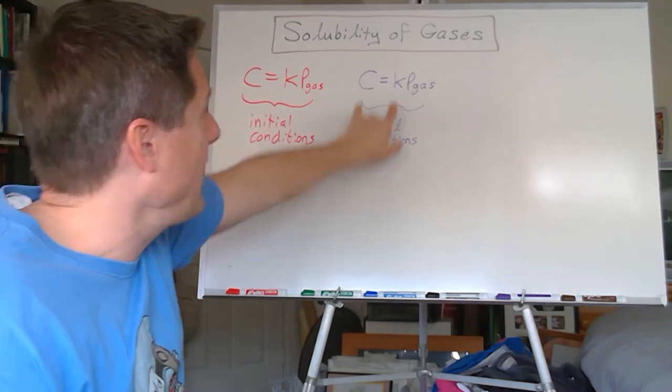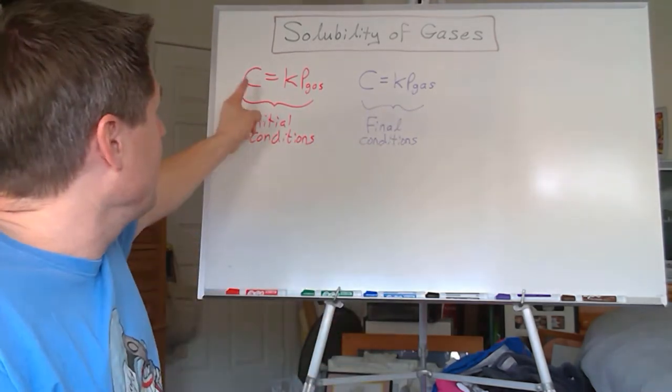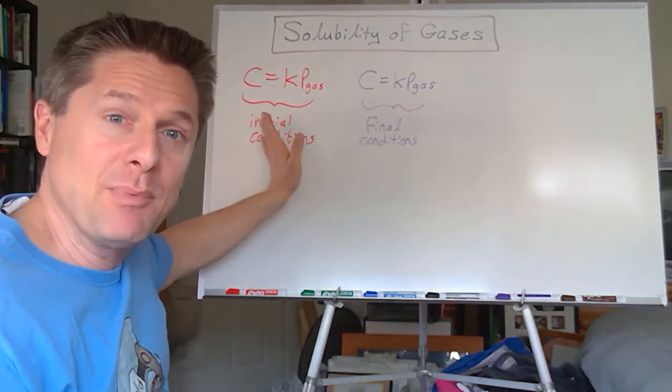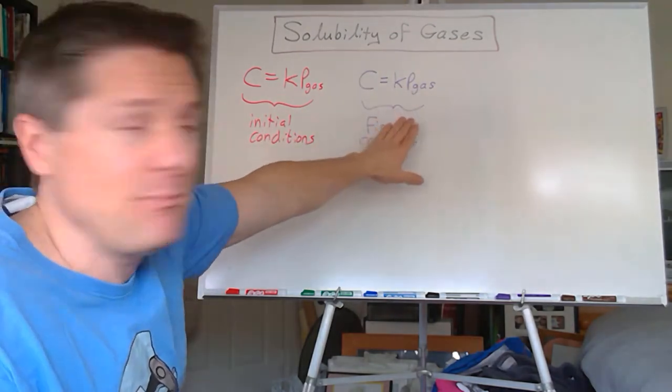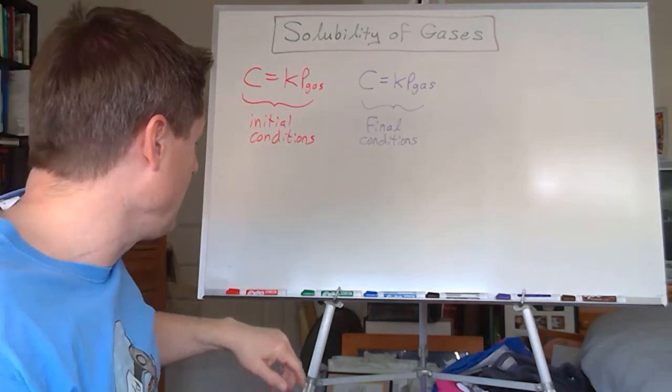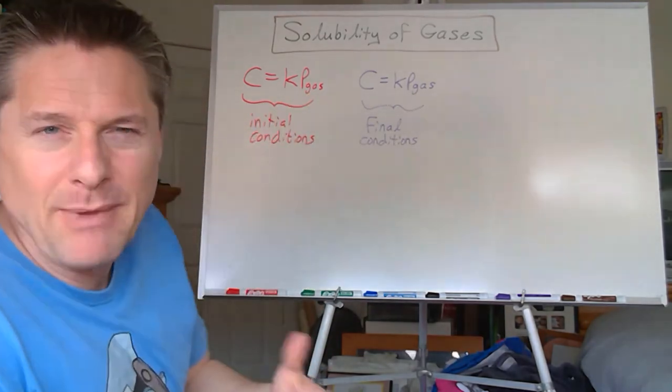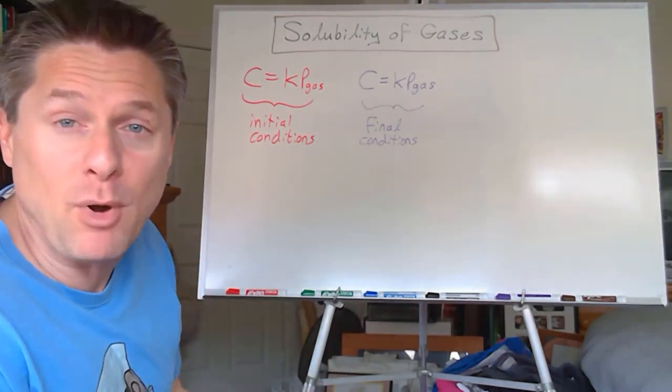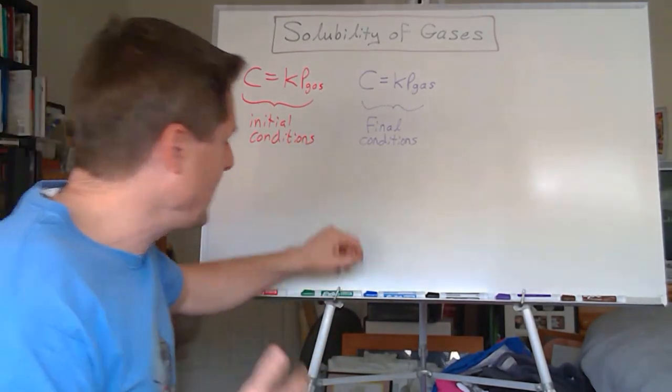Right, there's Henry's law. Some final conditions here. So we can label these as like C1, P1, C2, P2, or CI PI, CF PF. So let's call state 1 the initial state, state 2 the final. So instead of P gas, so pressure, I'm going to leave the sub gas up there. That P stands for the partial pressure of the gas. So let's take a look at this. Can we rearrange this? Because that's a constant, right?